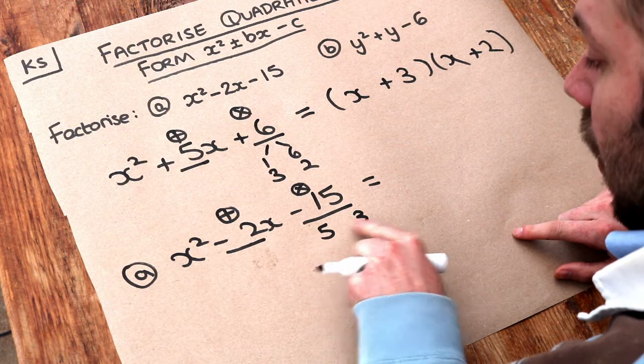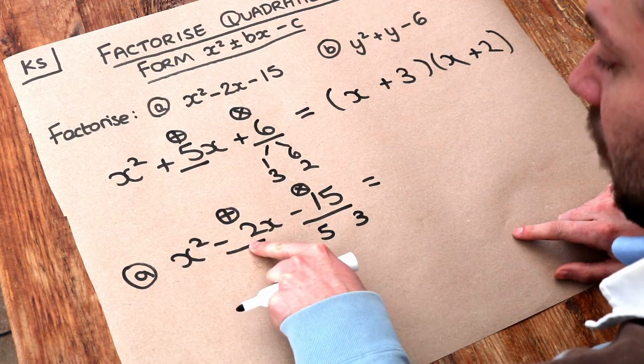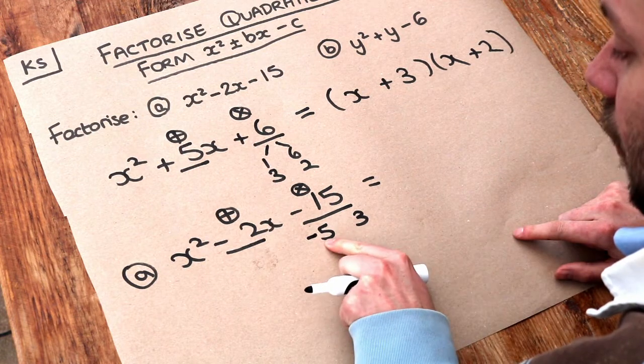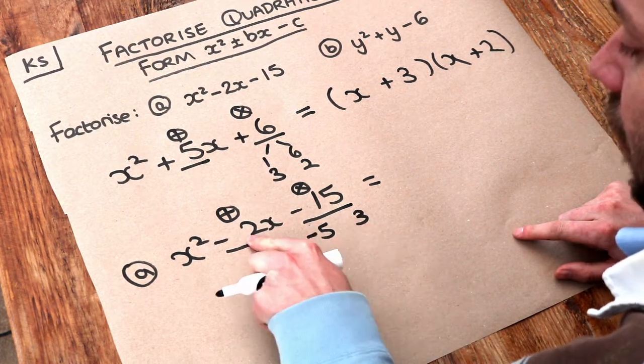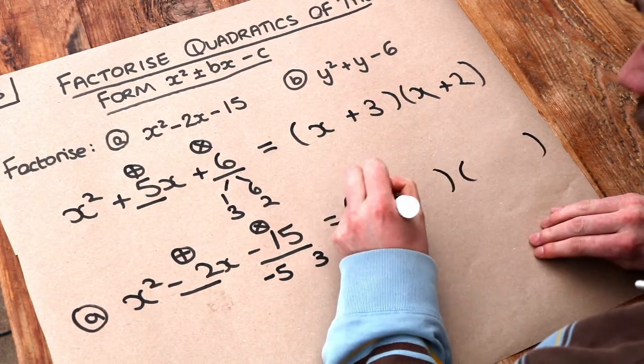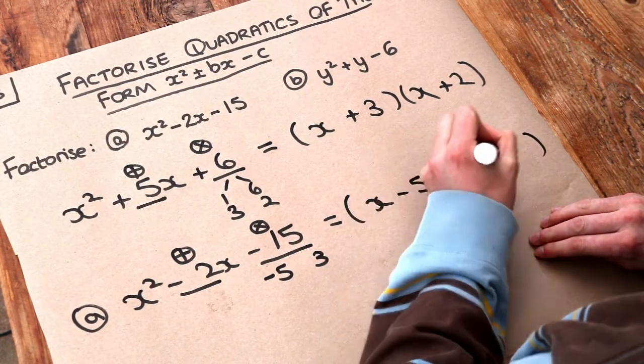Well if we had minus 5 plus 3, do they add to give minus 2? Yes they do. So we can see the negative goes on the 5 here because those two added together give you negative 2. And then we've got our two brackets. We've got x minus 5 and x plus 3.